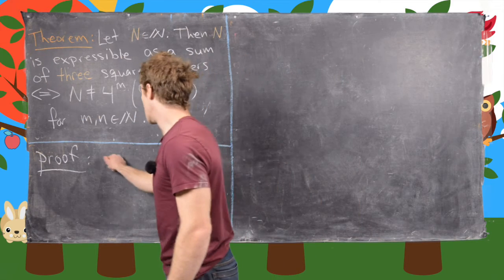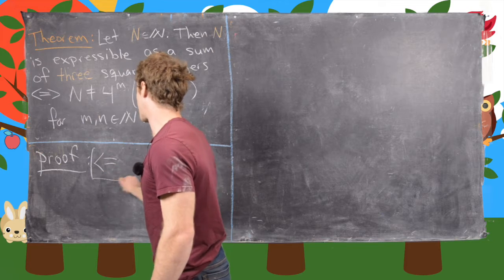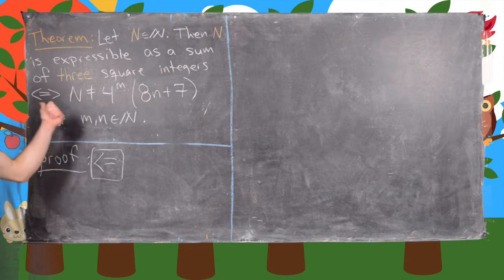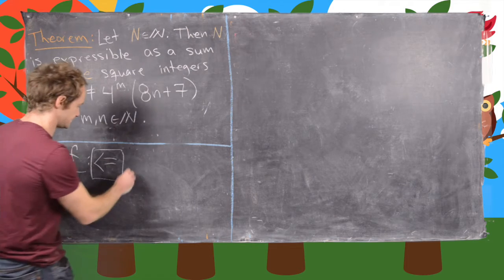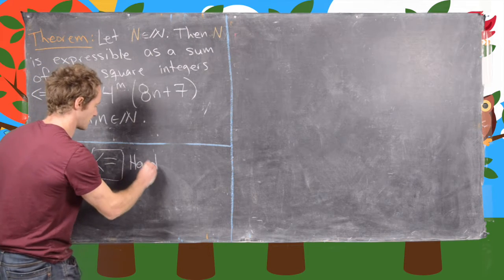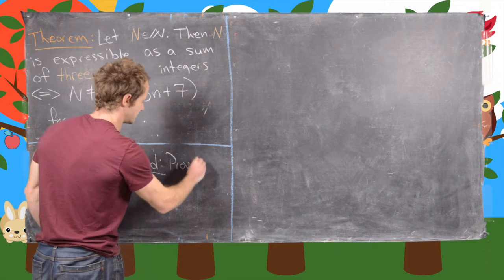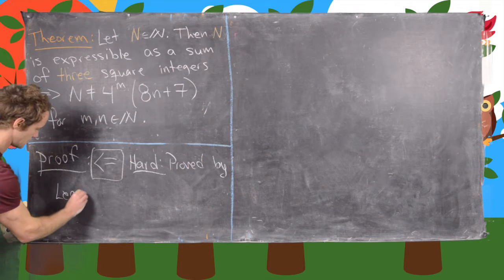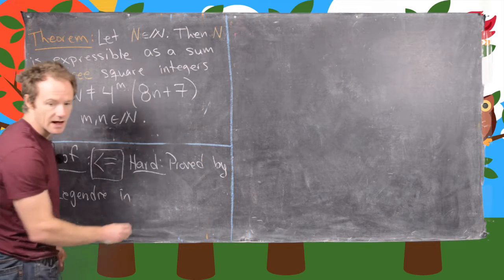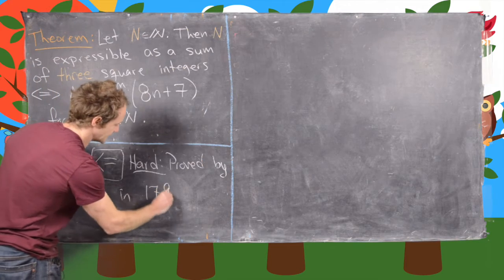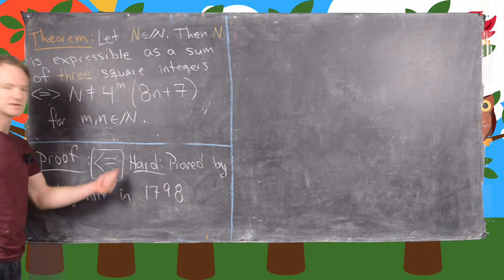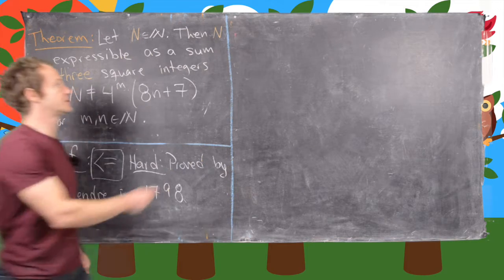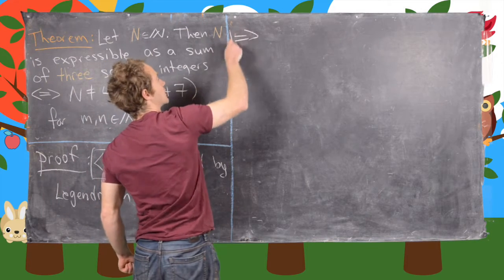Unfortunately, one direction of this is pretty hard, so we're not going to prove it. This reverse direction is quite difficult and was proved by Legendre in 1798. So unfortunately we're not going to do that direction of the proof, but we will do the other direction. Let's get started with that.